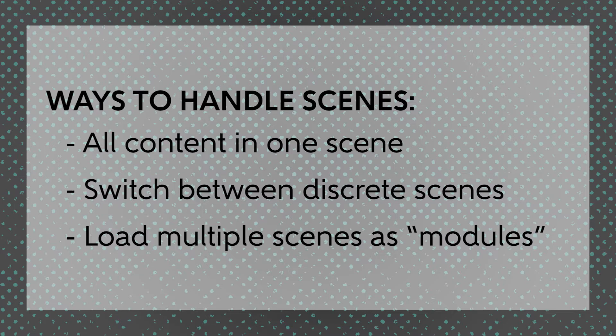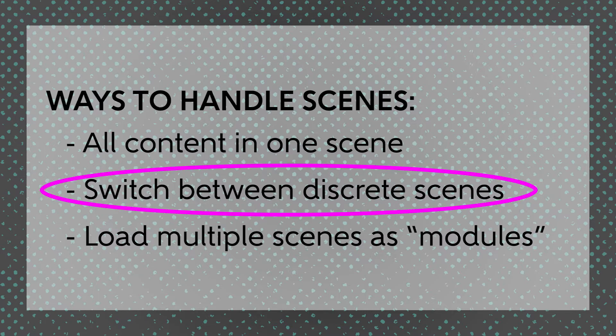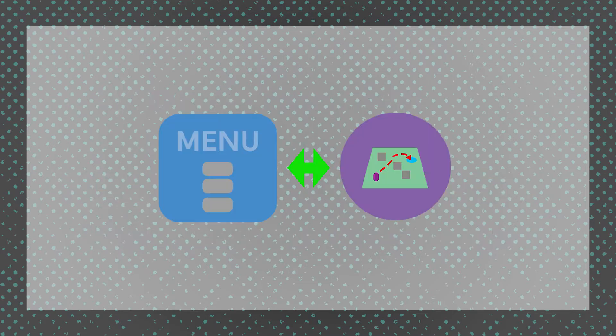For this particular video series, we're going to use the second approach — the more traditional kind of having each thing in a different scene and moving from scene to scene — because it works better for the type of game we're creating here, where it's really a discrete menu section and then a discrete game scene. We can do a menu scene, a game scene, and even add things like a game over scene or a high scores scene if we wanted to.